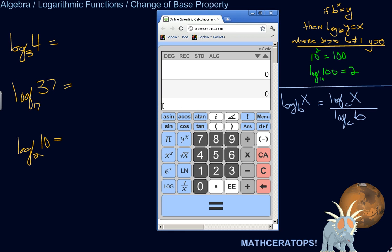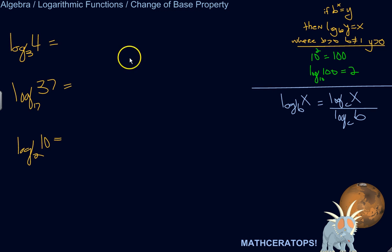So if it's a base other than E or 10, this change of base property is for you. Okay, so it basically says if I've got log base B of X,